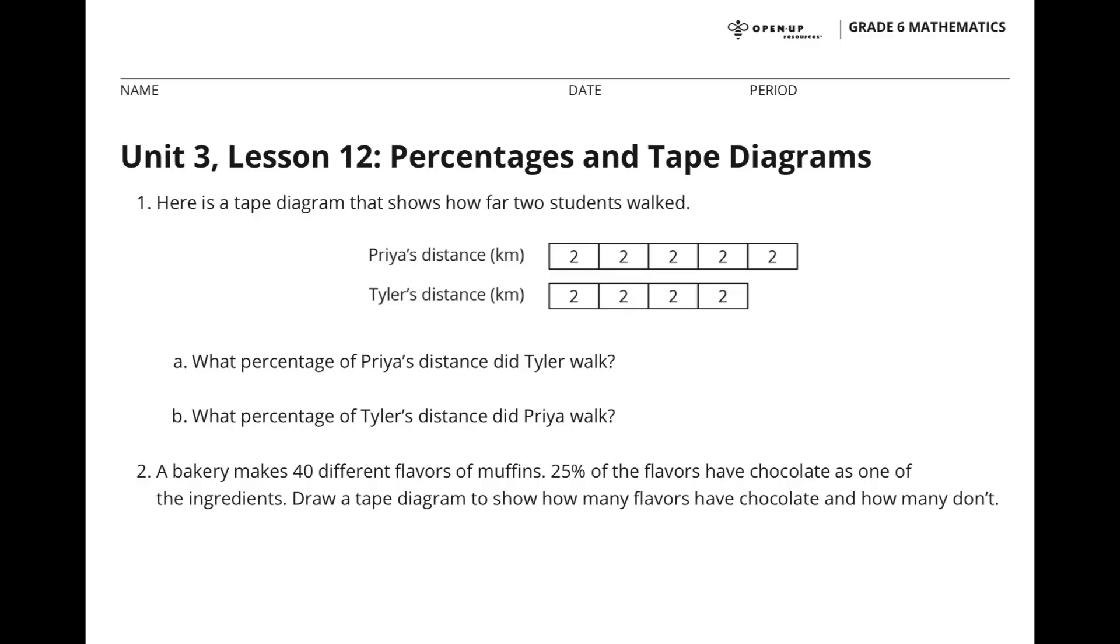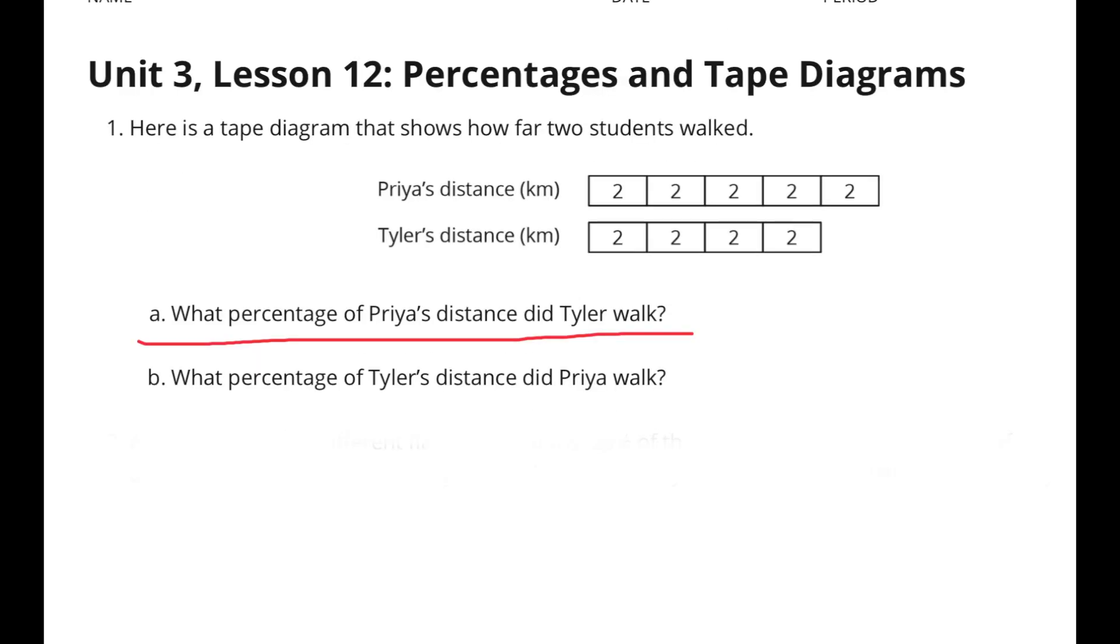Unit 3 Lesson 12: Percentages and Tape Diagrams. Here is a tape diagram that shows how far two students walked. What percentage of Priya's distance did Tyler walk?